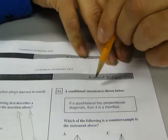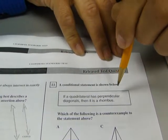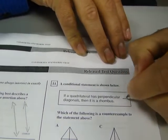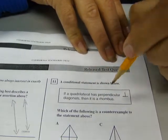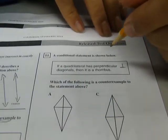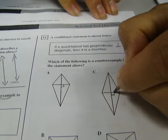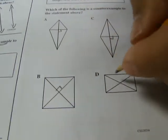All right, number 11. Your conditional statement is shown below. If a quadrilateral has perpendicular diagonals, so perpendicular means 90 degree intersection diagonals, then it is a rhombus. So what we want to find is one that has perpendicular diagonals that's not a rhombus. So this one here definitely has perpendicular diagonals. This one also. This one also has perpendicular diagonals. This one doesn't.